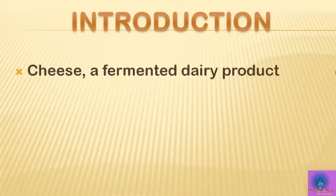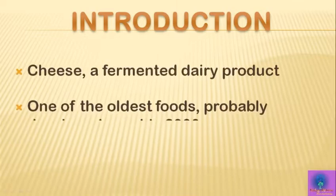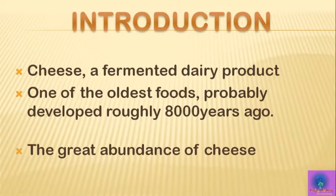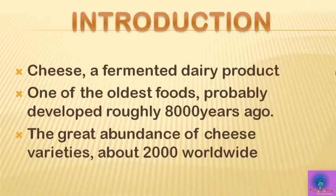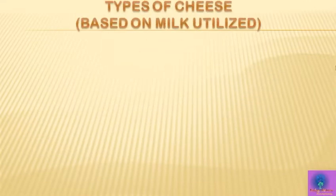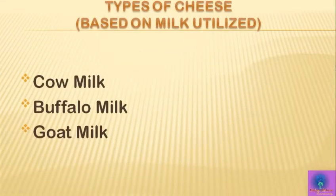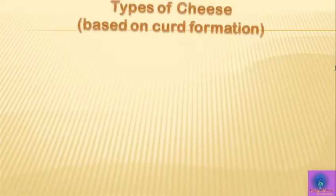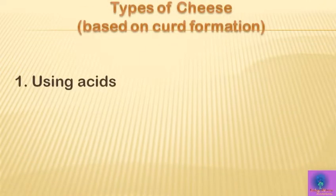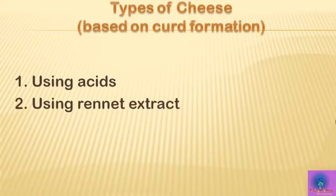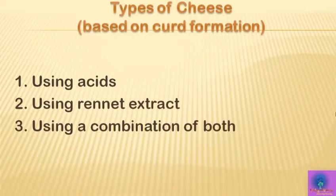Starting from the introduction, cheese is a fermented milk product and one of the oldest foods. There are approximately 2,000 varieties of cheese worldwide. These cheeses can be categorized into several classes: on the basis of milk utilized, such as cow, buffalo, goat, or sheep; and on the basis of curd formation process, using acids, rennet extract, or a combination of both. Rennet is a complex set of enzymes produced from calf stomachs.